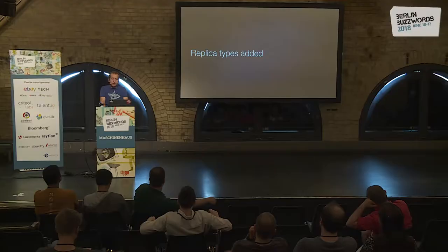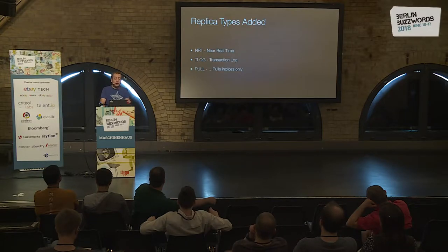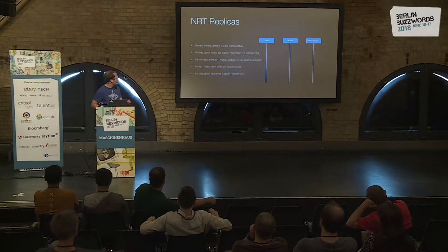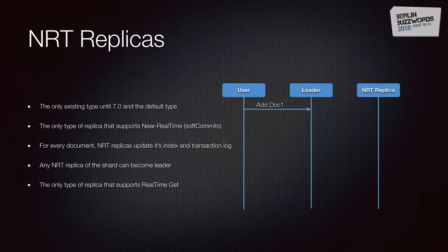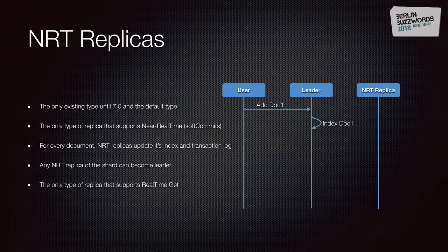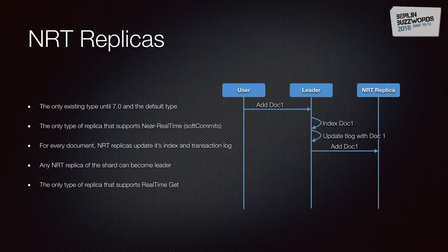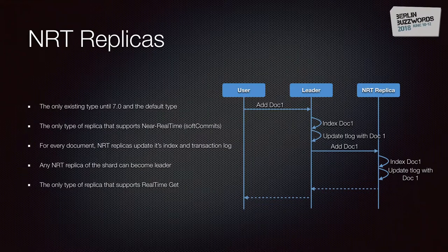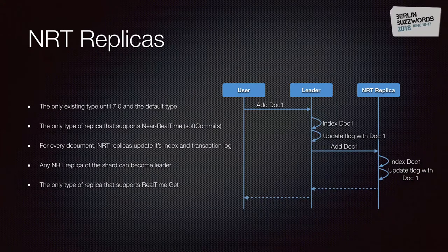To address these issues, three types of replicas were added: NRT (near real-time), TLOG (transaction log), and Pull. NRT replicas are not really a new type — this is the name given to the existing type in SolrCloud, and it works exactly the same way. When a document is added, the leader adds it locally, updates the transaction log, sends it to all NRT replicas, which index the document, update the transaction log, and respond. NRT replicas support everything SolrCloud supports today: soft commits, real-time gets, and they can become leaders.